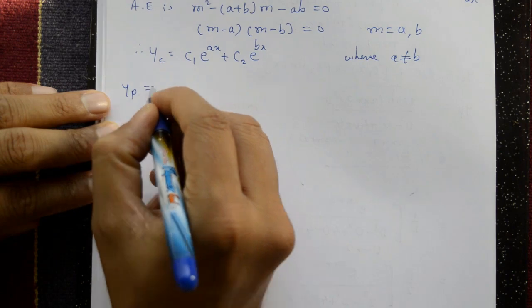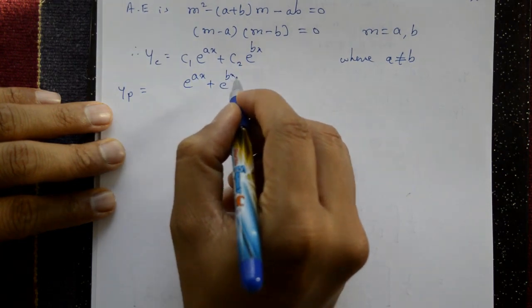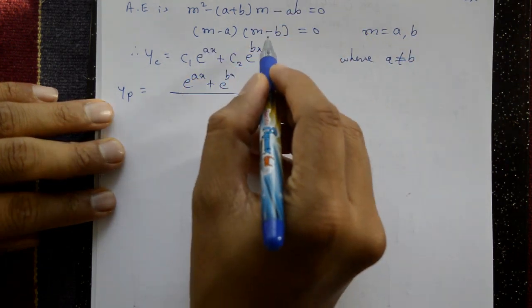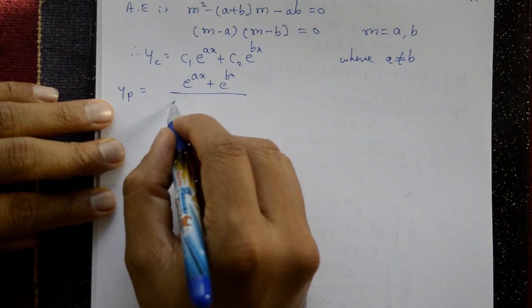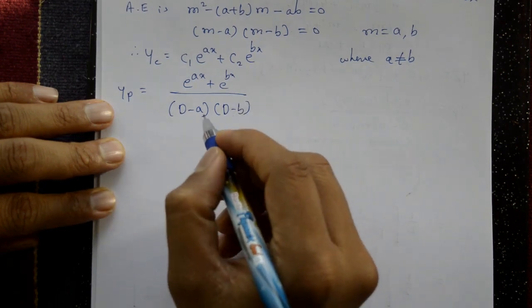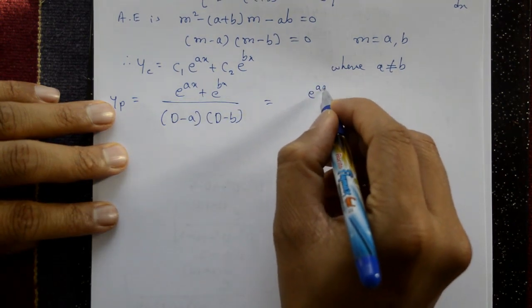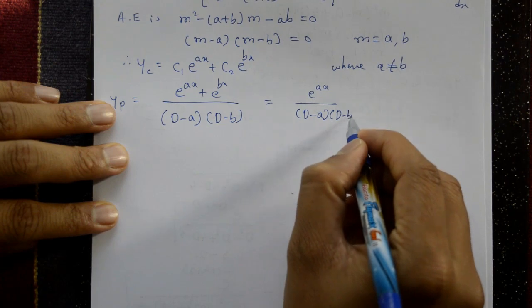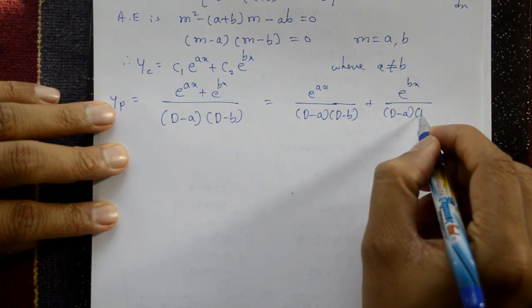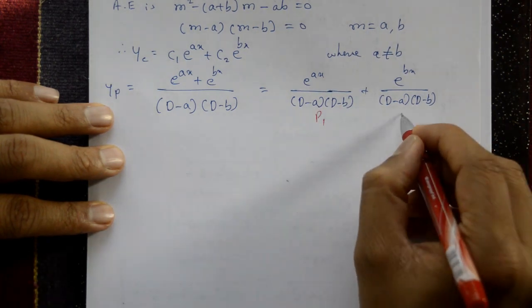Now for the particular integral: yp = [e^(ax) + e^(bx)] / f(D), where f(D) = (D-a)(D-b). Separating: yp = e^(ax)/[(D-a)(D-b)] + e^(bx)/[(D-a)(D-b)]. Call these P₁ and P₂.